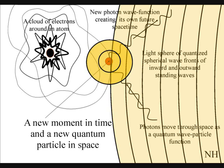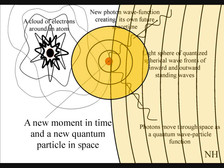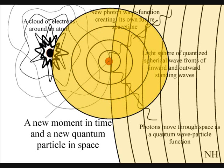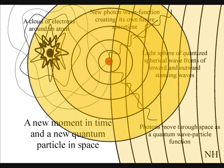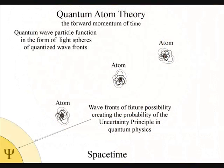Each atom will radiate out light spheres of quantized wave fronts. Each expanding wave front will create a probability of a future event.